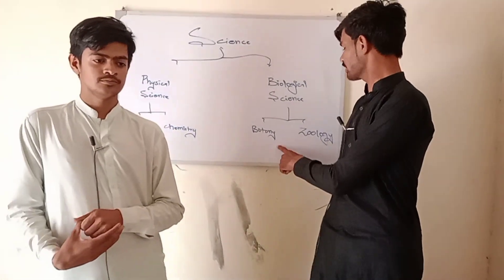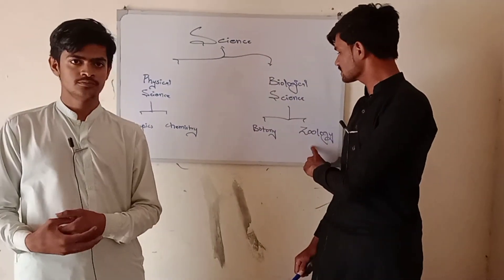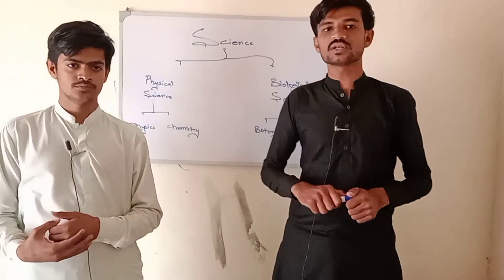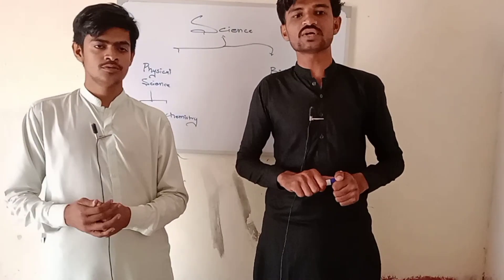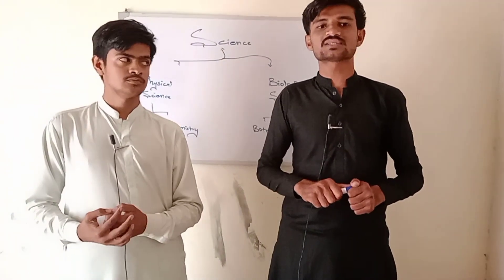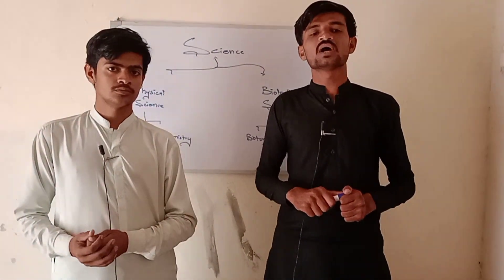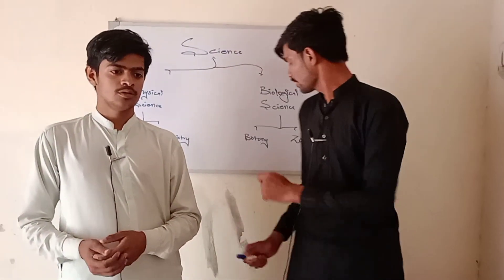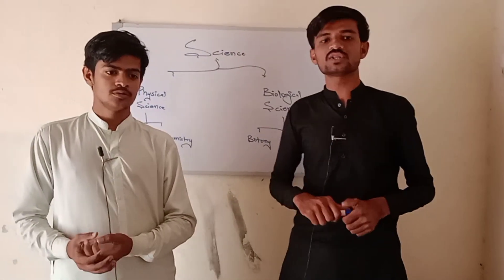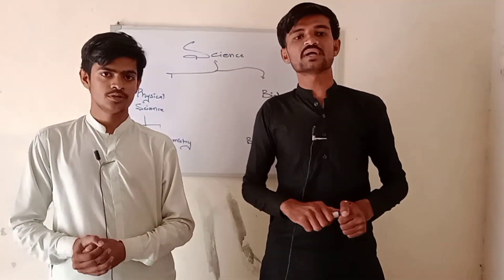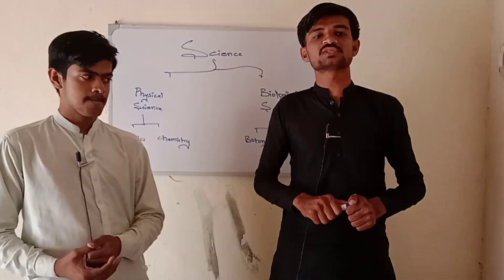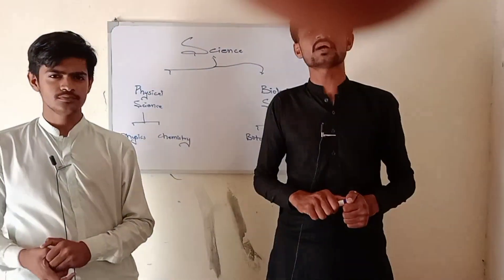The first branch is botany and the second is zoology. In botany we study about plants and their species. In zoology we study about animals and their species — what kinds of species are available in this universe.